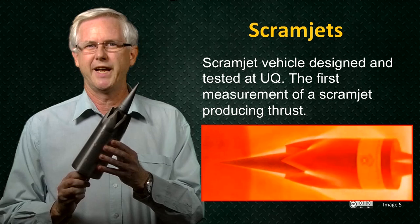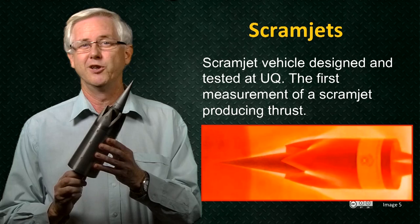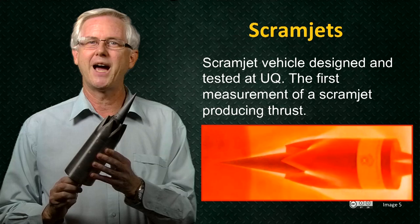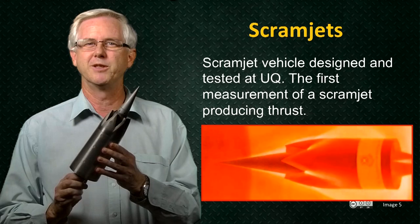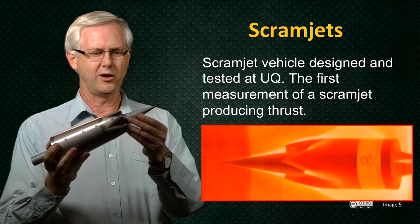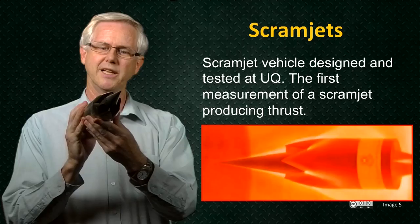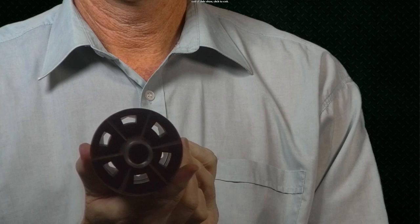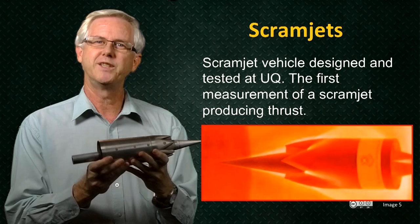Here is an example of a small model scramjet engine that was tested in one of our shock tunnels, the T4 Stalker Tube, at the University of Queensland. And this scramjet was the first complete scramjet-powered vehicle that was demonstrated to be capable of producing enough thrust to overcome its drag. The photograph shown here is a version of the engine when it was tested in the shock tunnel. This engine consisted of a conical intake and it had six combustion chambers located around a cylindrical centre body. And then it has a series of six nozzles.